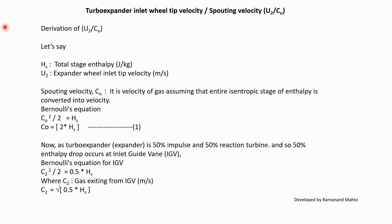Let us derive the speed ratio U2 by C0. Let Hs be the total isentropic stage enthalpy drop (in J/kg) and U2 be the expander wheel inlet tip velocity (in m/s). The Spouting Velocity C0 is the velocity of gas assuming the entire isentropic stage enthalpy drop is converted into velocity. Using Bernoulli's equation: C0² = 2·Hs, so C0 = √(2·Hs).